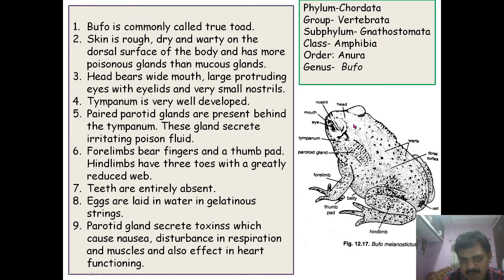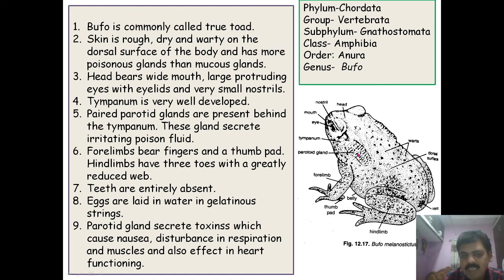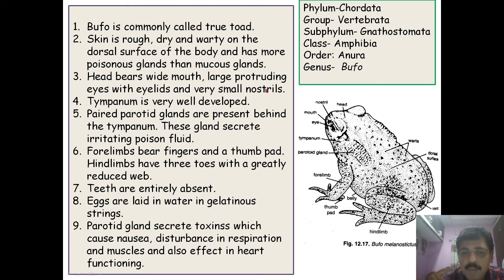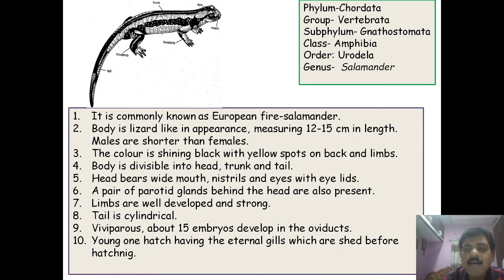Eggs are laid in water in a gelatinous string. The parotid gland secretes a toxin that causes nausea, disturbance in respiration and muscles, and also affects the heart functioning of prey organisms. These are the characteristic features of Bufo, the true toad.